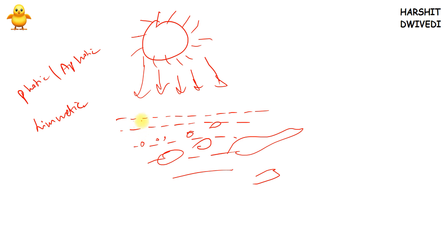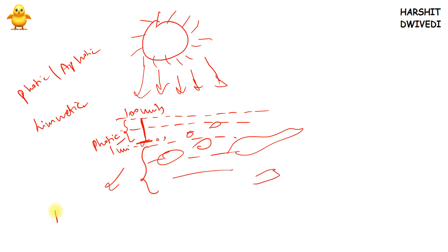The photic zone is the zone where light is actually present. For example, if 100 units of light are striking the surface, then down to the depth where one unit of light is still reaching, that is known as the photic zone. All photosynthetic activity is carried on in this photic zone — both photosynthesis and respiration occur here. Below it is the aphotic zone, where only respiration is taking place and photosynthesis is not occurring. This is why the photic zone becomes so important.